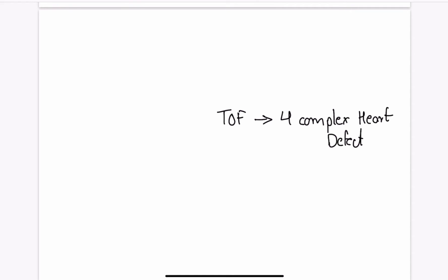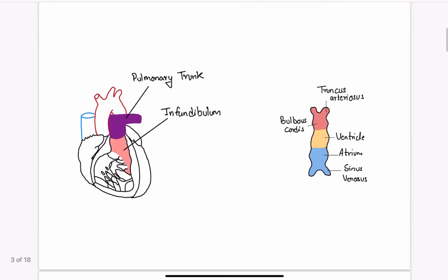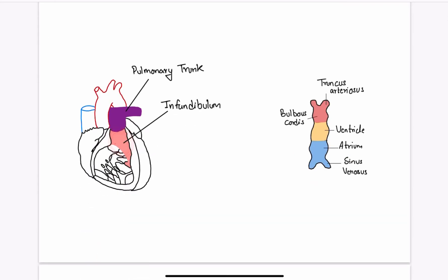Although it consists of four complex defects, the cause is single and that is displacement of the infundibulum. Infundibulum is a smooth muscular structure which forms the right ventricular outflow tract. It's a funnel-shaped structure which leads the blood flow from right ventricle to pulmonary valve. It is developed from embryonic structure called bulbus cordis.